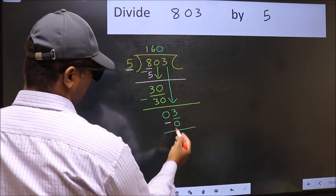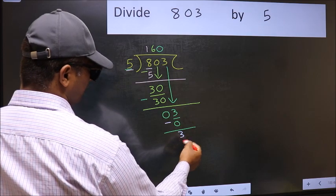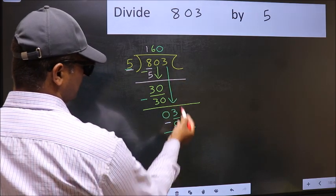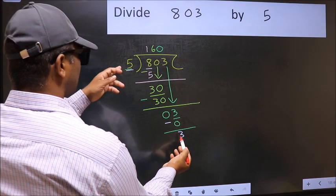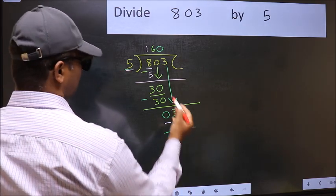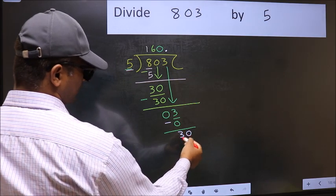Now you should subtract. 3 minus 0, 3. Over here, we did not bring any number down. And 3 is smaller than 5. So, now you can put dot dot and take 0. So, 30.